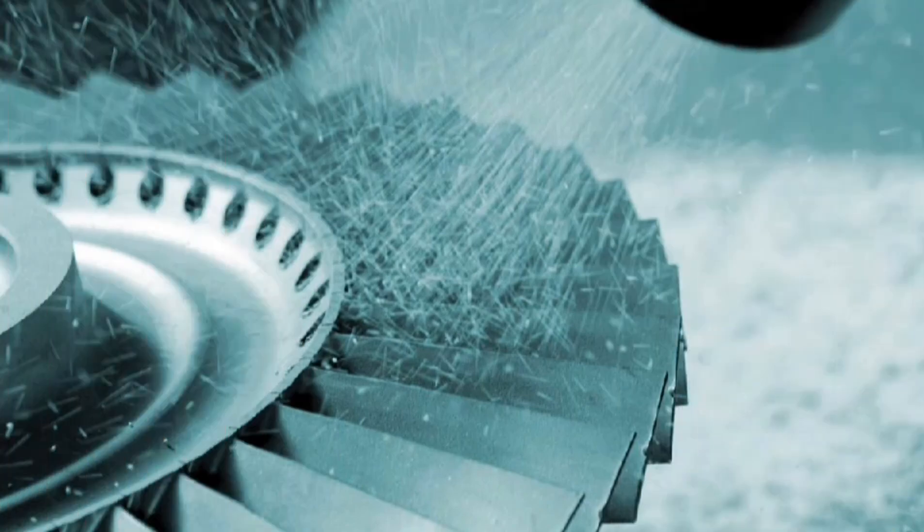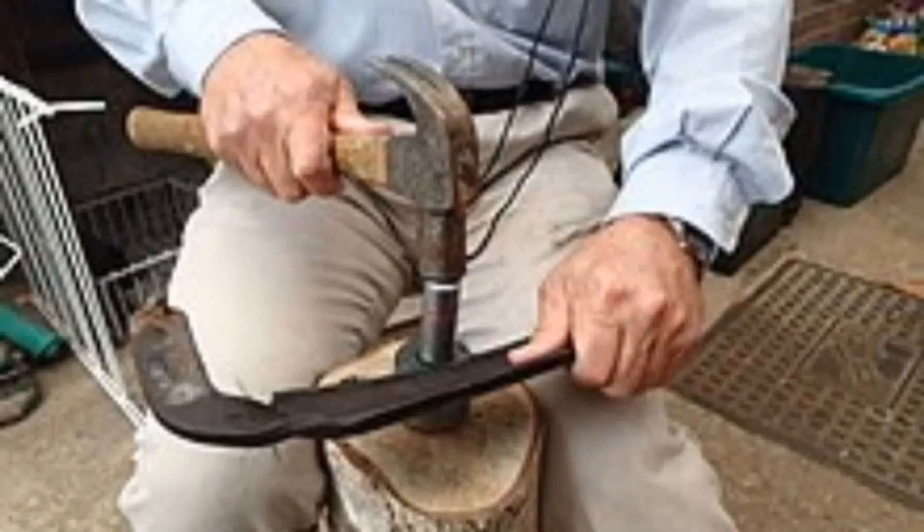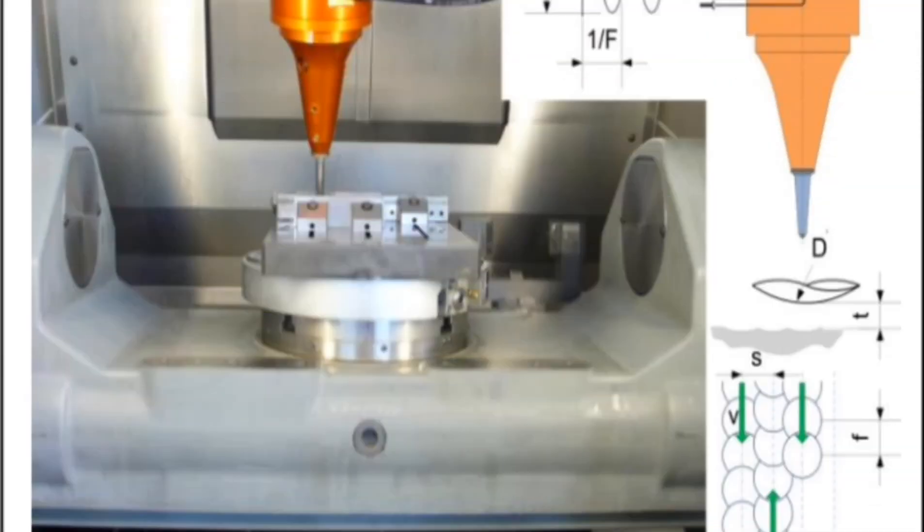Residual stresses, if not addressed, can contribute to stress corrosion cracking over time. Pinning reduces stress corrosion cracking by modifying the stress distribution within the material, making it more resistant to the corrosive effects of the environment.